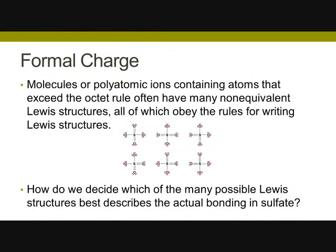Molecules or polyatomic ions containing atoms that exceed the octet rule often have many non-equivalent Lewis structures, all of which obey the rules for writing Lewis structures. How we decide them is based on formal charge. This picture here shows six different ways to draw the structure of sulfate, SO4 minus 2. But how do we know which one is best?